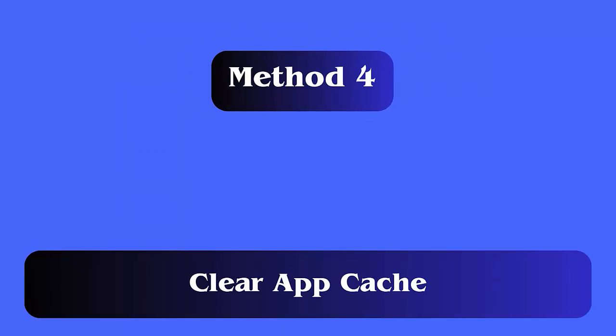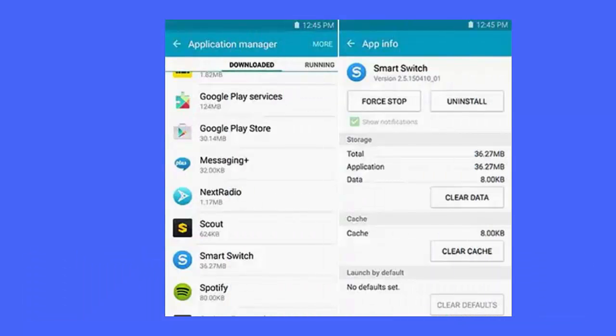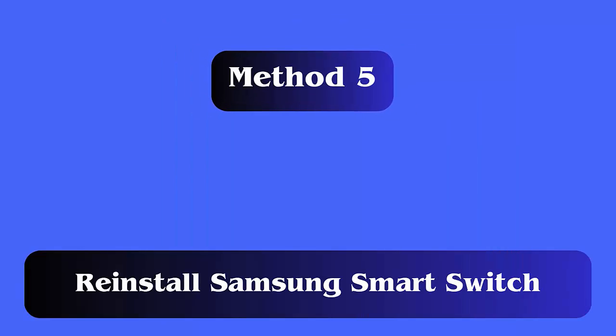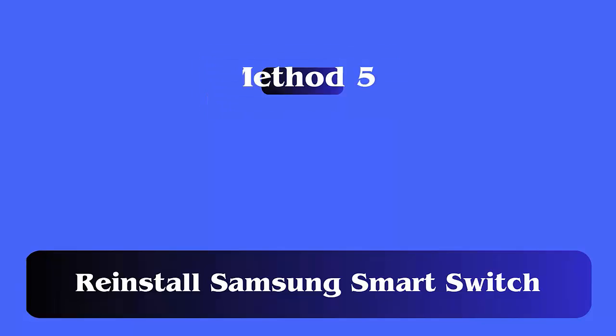Method 4: Clear the app cache. Clearing the app cache is one of the best ways to fix Smart Switch stuck at 99% or 1%. The app or its stored cache could be the problem. Go to Settings, then Apps, then Smart Switch, and click on 'Clear stored cache'.